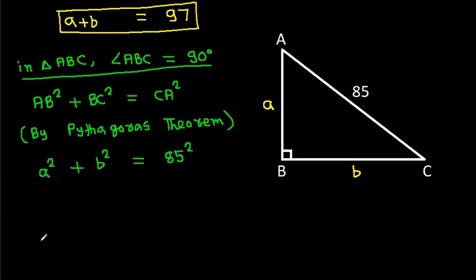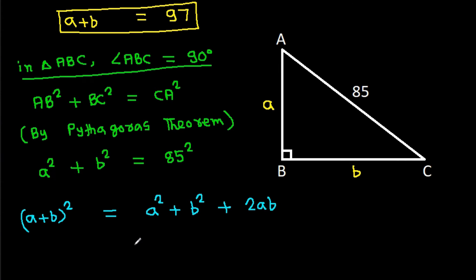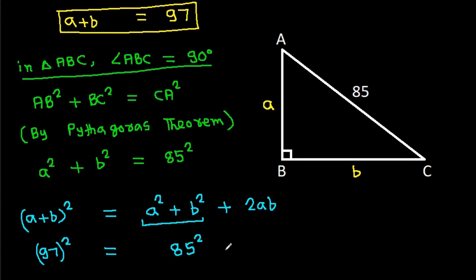Now, we know that (A plus B) squared equals A squared plus B squared plus 2AB. Since A plus B equals 97, we have 97 squared equals 85 squared plus 2AB.